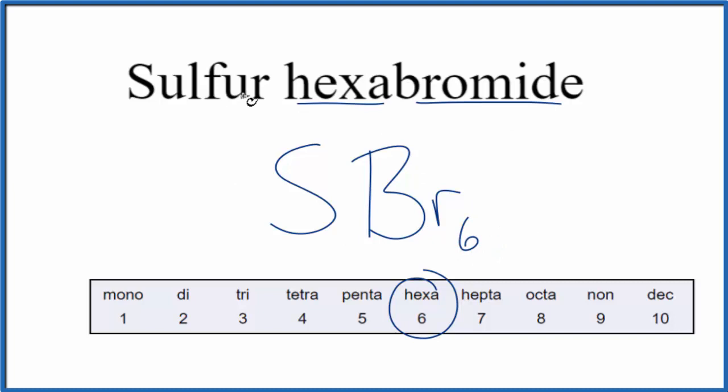So that makes this the formula for sulfur hexabromide. Note that for sulfur, we have it by itself, but for the first element in a formula, we don't write mono. We just put sulfur all by itself.